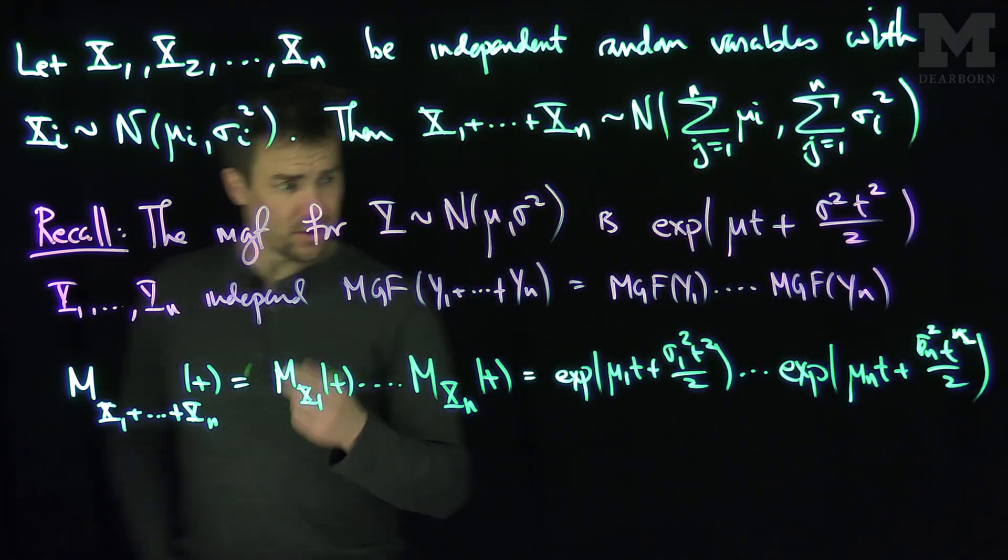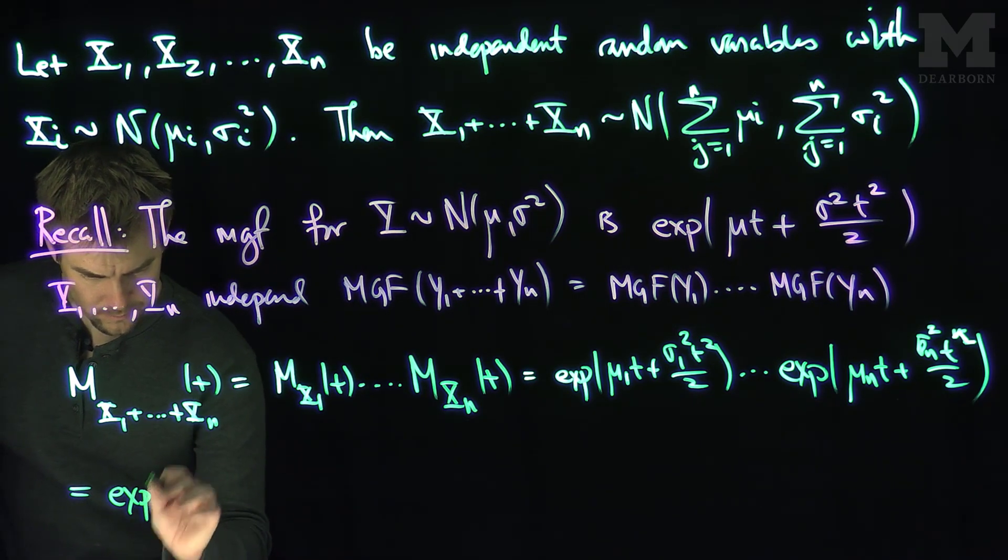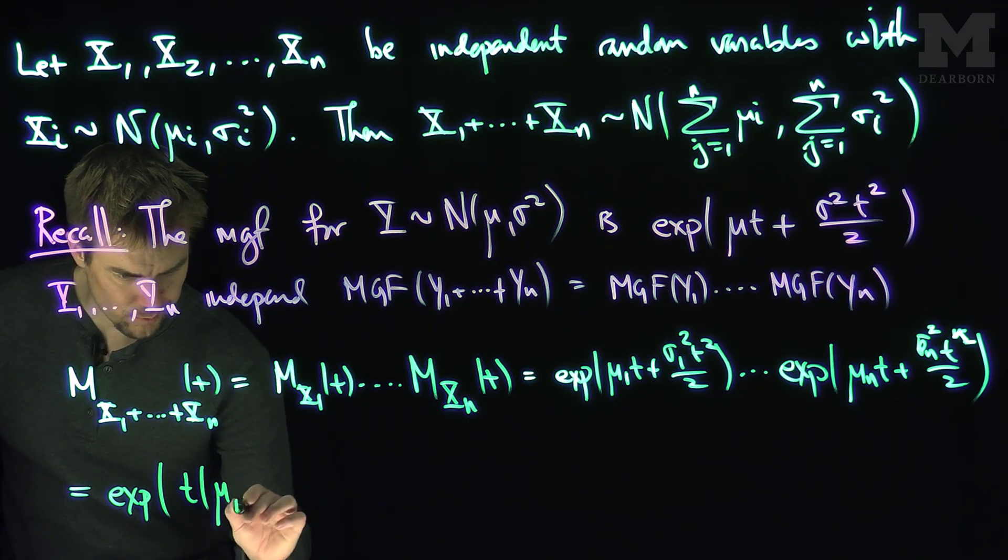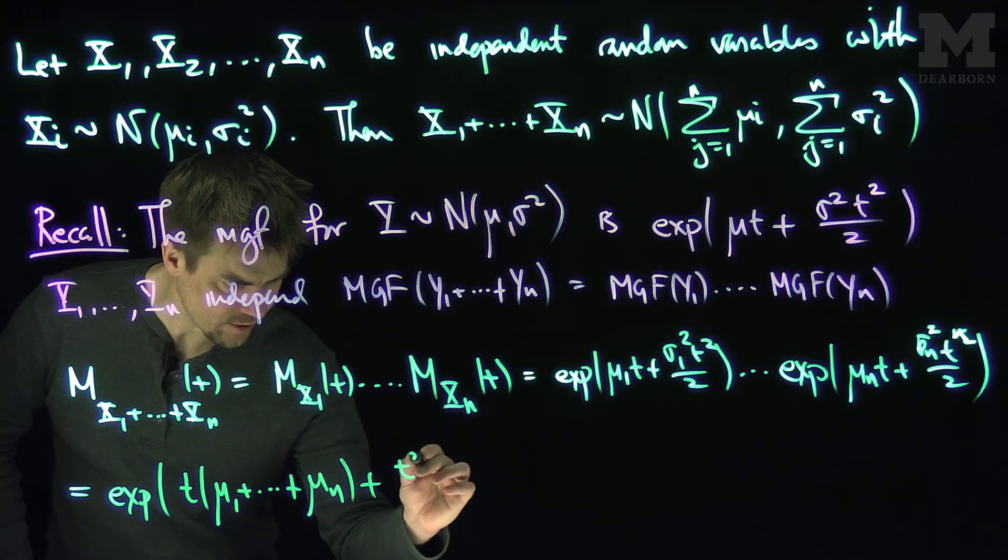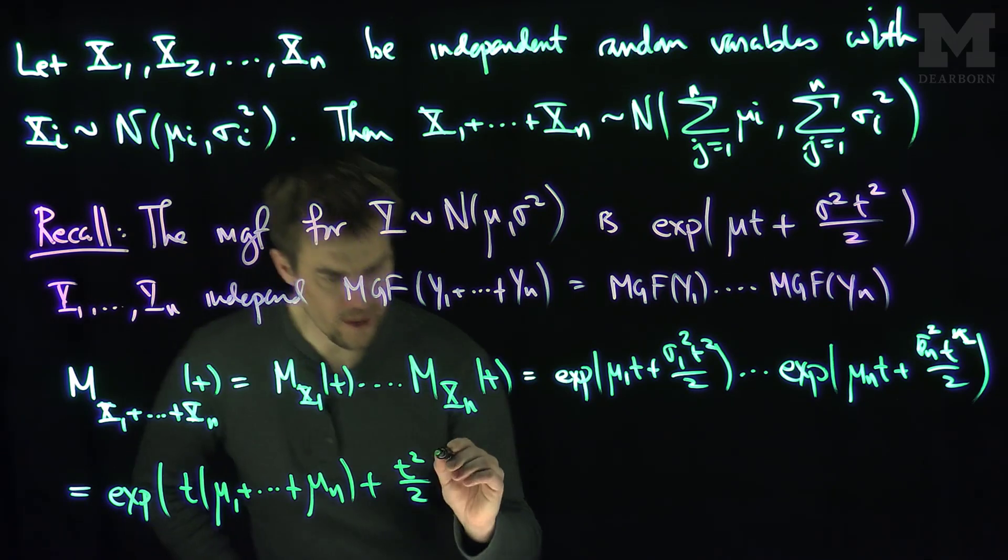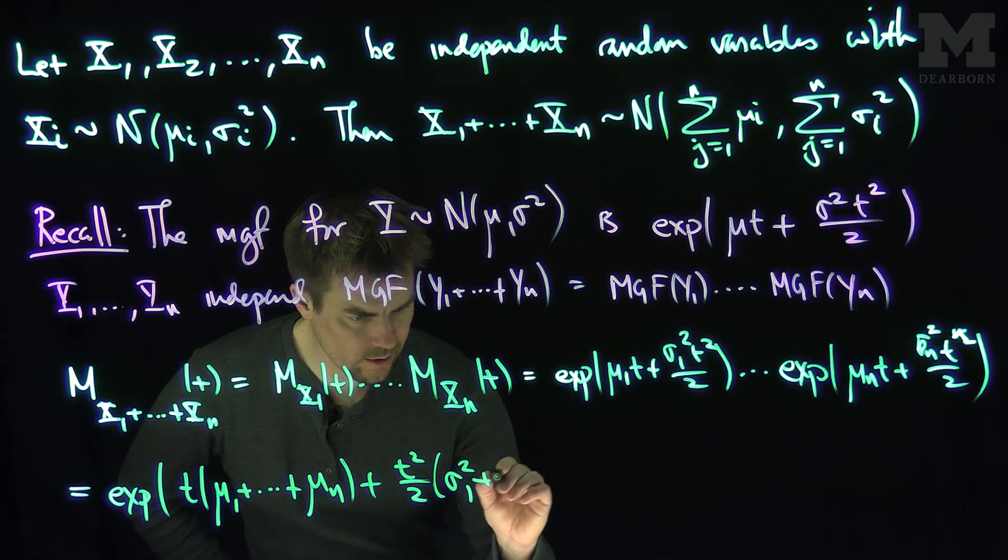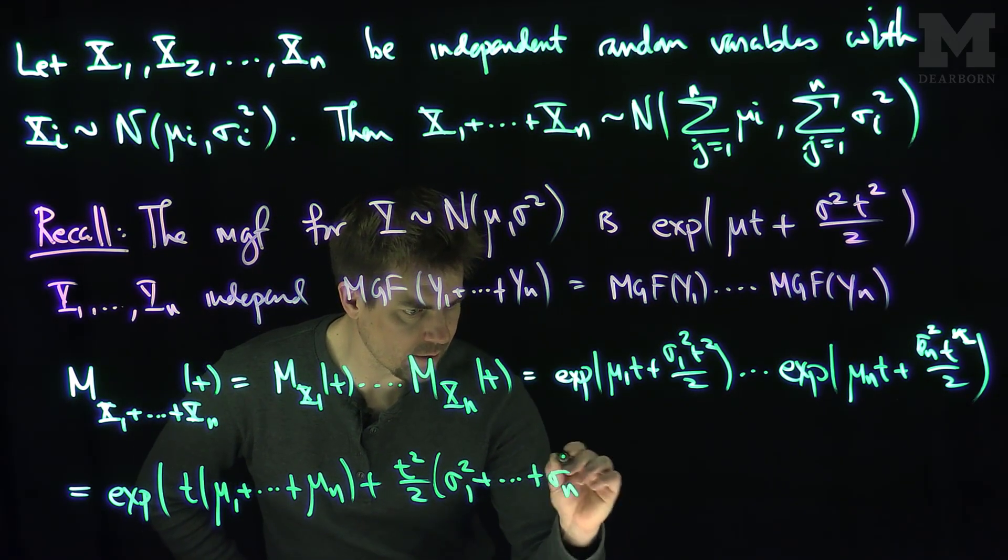And so now by properties of exponentials, I can write this as the exponential of t times μ₁ plus all the way down to μₙ plus t squared over 2 and then the sum of the sigmas, σ₁ squared plus σₙ squared.